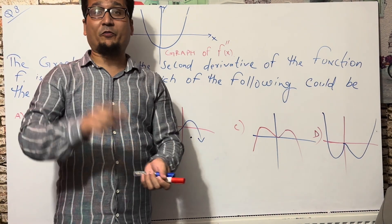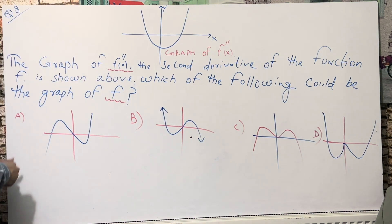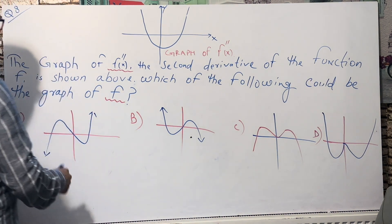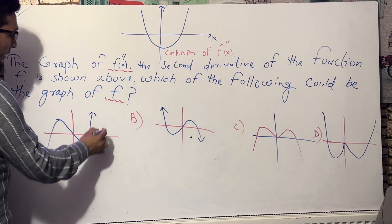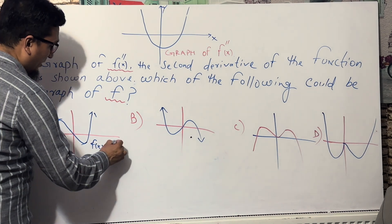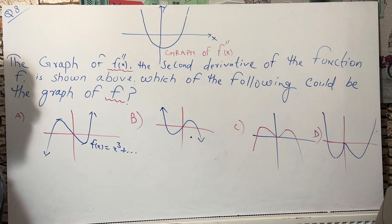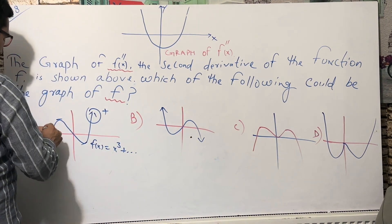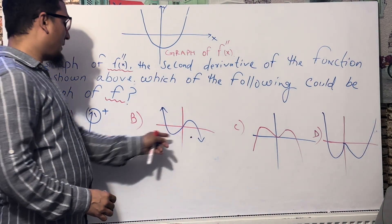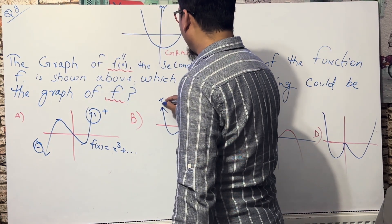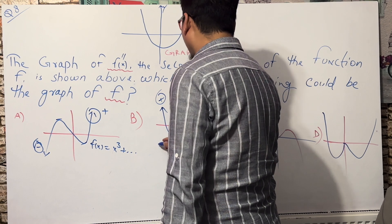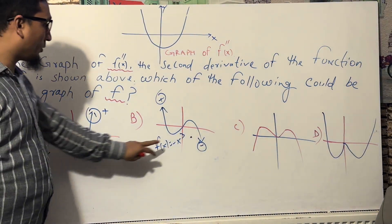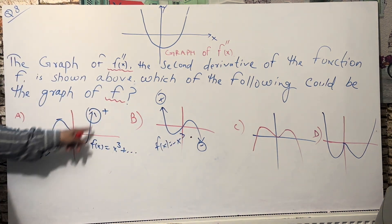First, I'm going to tell you the rough equation of the given graph options. If you see option A, the right side is up and the left side is going down, with just two turning points - this is a cubic equation, something like F(x) = x³. Option B is the reflection: the left side is up and going down on the right, so this is the graph of minus x³.